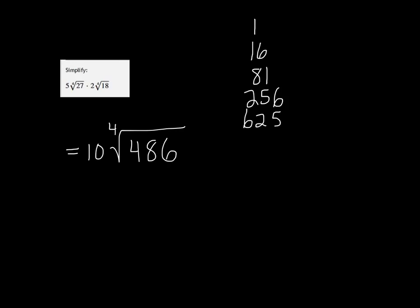So I'm going to take 486 and divide it by 16, and it doesn't go in evenly. So let's try 486 divided by 81.